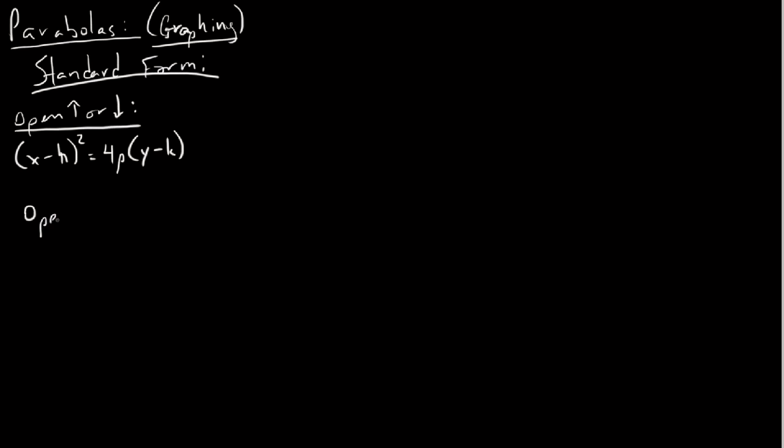And also this. We say for parabolas that open sideways, so that is they open to the right or left, parabolas that do so, they actually proceed in this manner: (y - k)² = 4p(x - h).